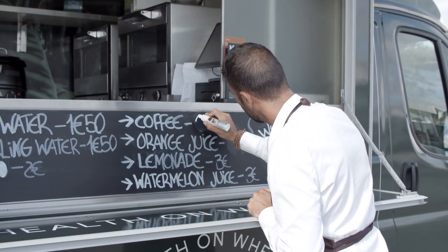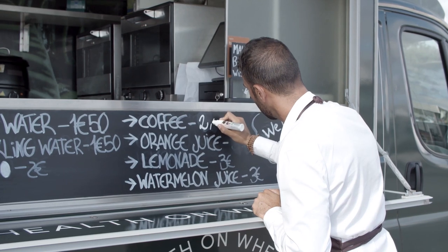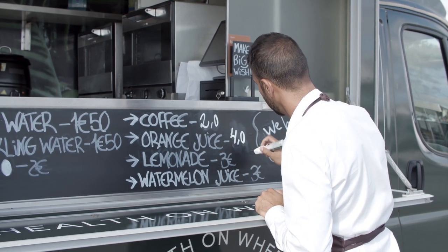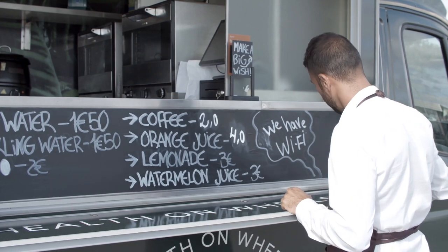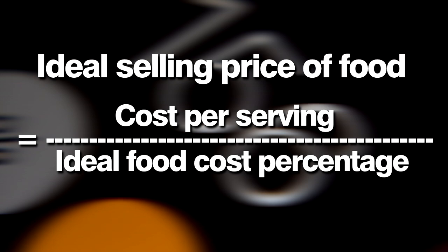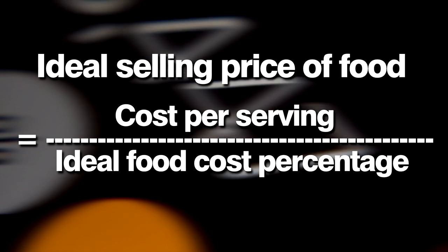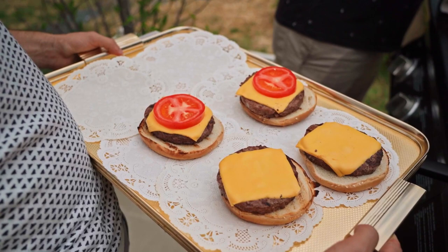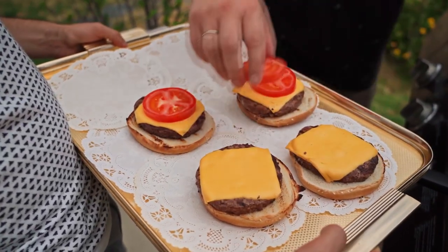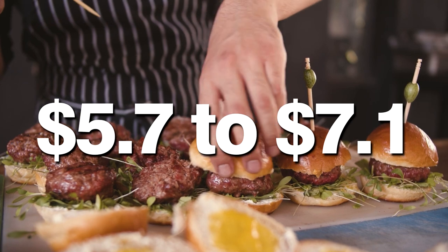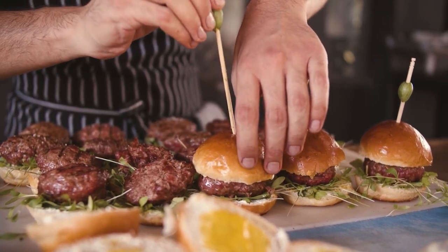How to set the sale price of your restaurant's food items. Setting menu prices correctly is a huge factor for your restaurant's success. The formula is: ideal selling price equals cost per serving divided by ideal food cost percentage. For example, if the cost of ingredients for a burger is $2 and we want a food cost between 28% to 35%, the price should be between $5.70 to $7.10 — realistically $6 to $7.